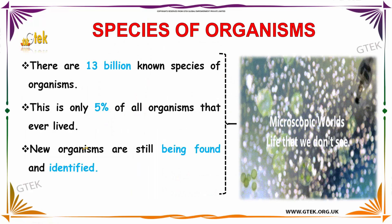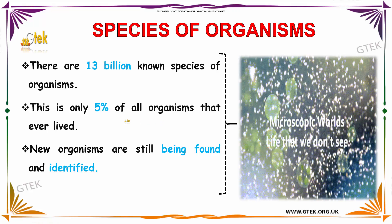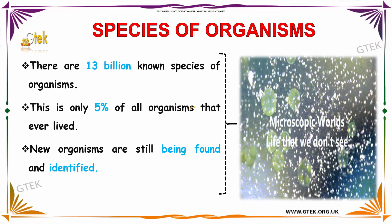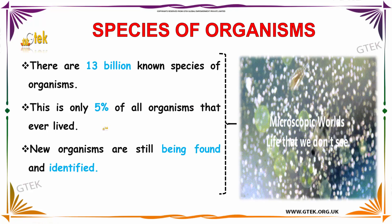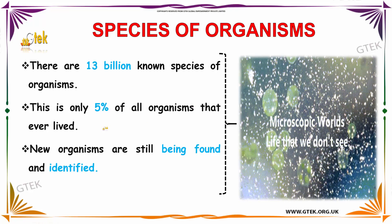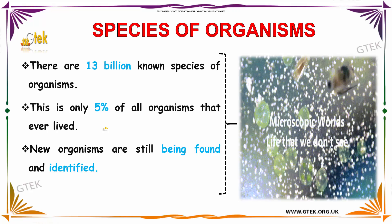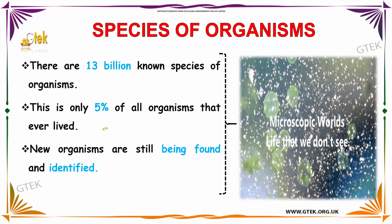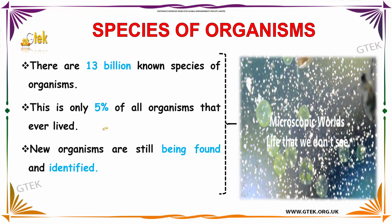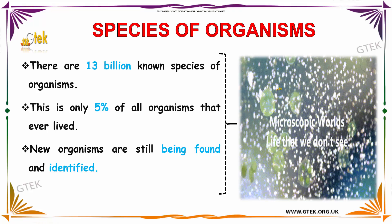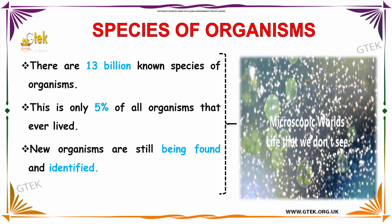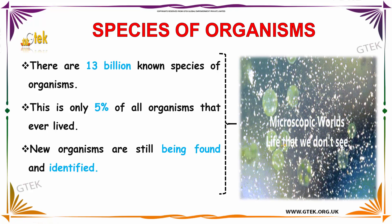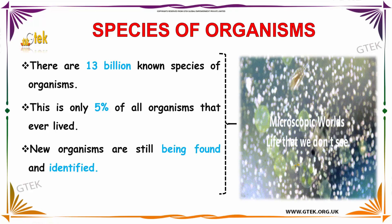Now let's talk about species of organisms. There are 13 billion known species of organisms. This is only 5% of all organisms that ever lived. New organisms are still being found and identified. Here, the microorganisms over here — these organisms we are not able to see.